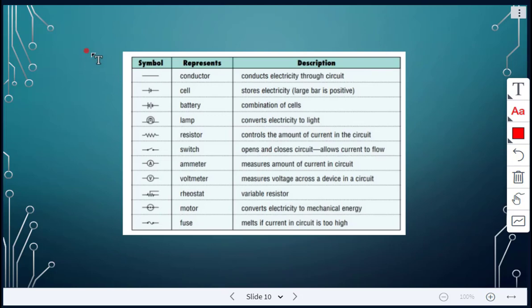Okay, just some more symbols here. So we looked at the conductor. We looked at the cell. So it stores electricity. A battery is a combination of cells. So here we would have two cells. A lamp, a resistor, a switch. This is an ammeter. We'll talk a little bit more about this and we'll see it when we do our lab. An ammeter measures the amount of current in a circuit. A voltmeter, shown with the circle and the V, that will measure the voltage across the device in a circuit. A rheostat. This is a symbol for a motor. And then this is a symbol for a fuse.